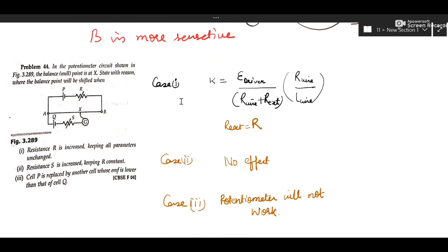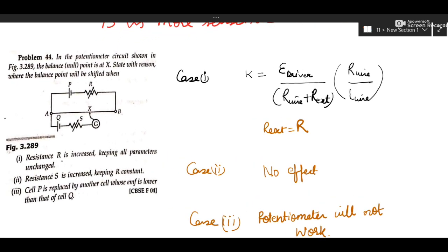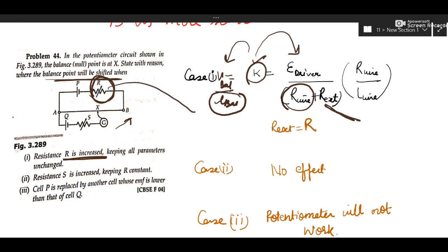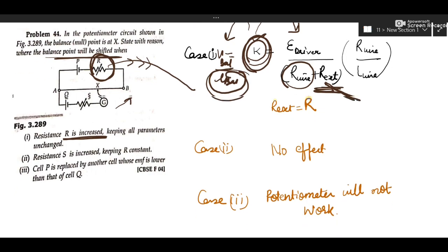In a potentiometer circuit, if resistance R (the wire resistance) is increased, K decreases. Since K = V_balanced / L_balanced, if K decreases, balancing length increases, so the balance point shifts towards B. If external resistance is increased, potential gradient decreases and length increases, so balance point again shifts towards B.